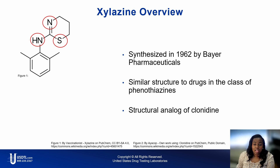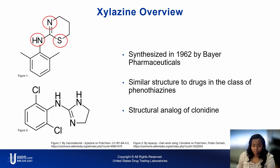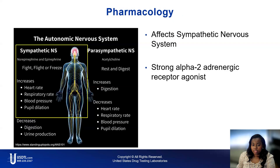Clonidine is used to treat high blood pressure, ADHD, and drug withdrawal from alcohol, opioids, and nicotine, in certain pain conditions. Clonidine was granted FDA approval in 1974. Xylazine did not pass clinical trials for human use and was never approved by the FDA due to its severe central nervous system depression effects.